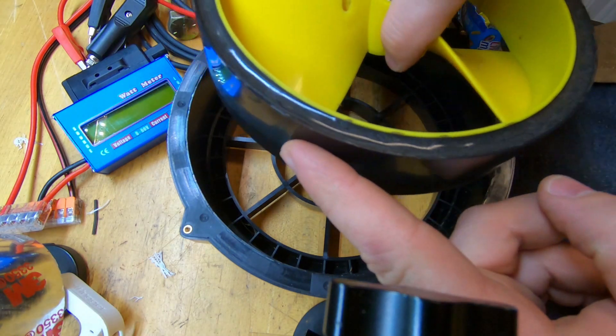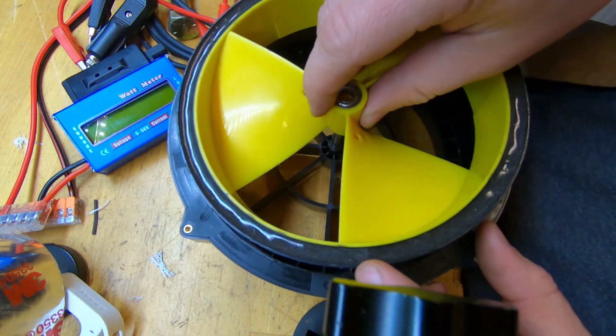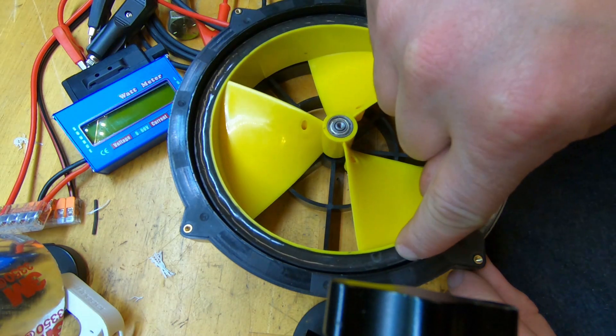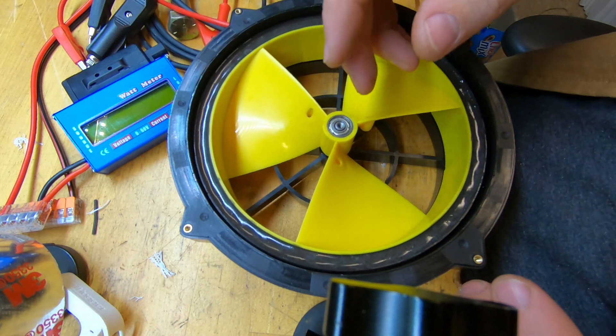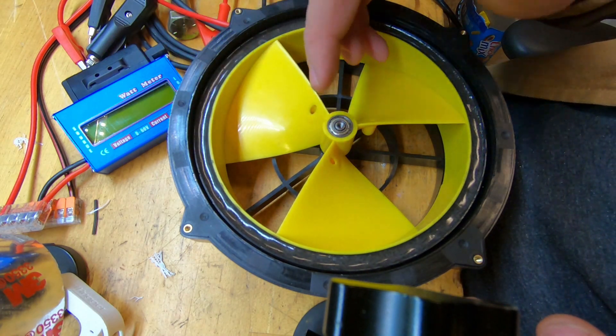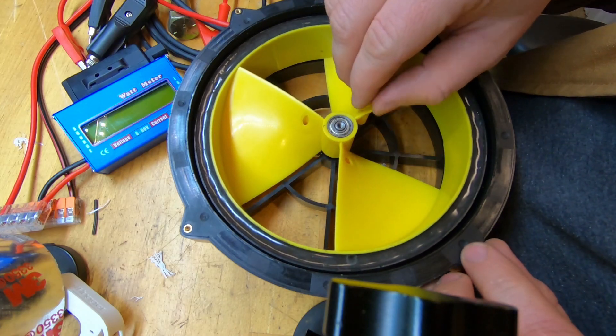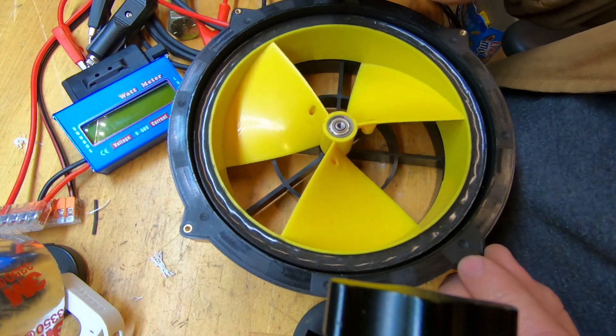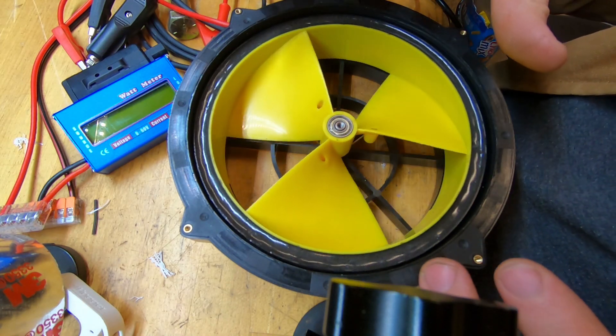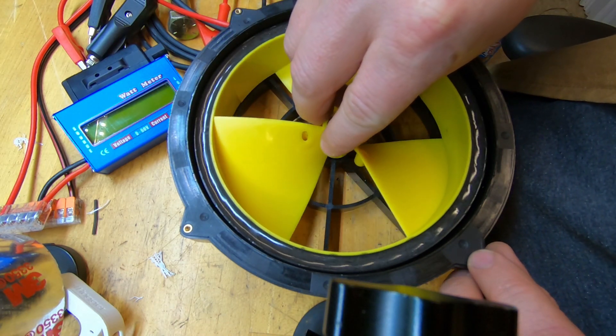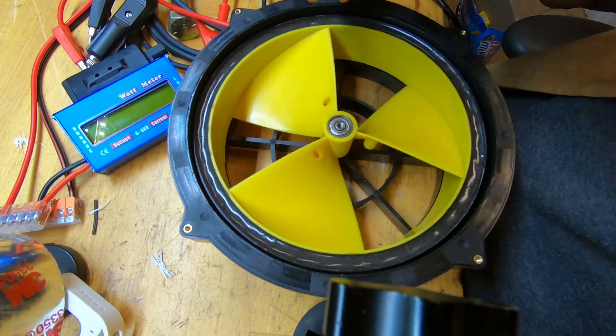And then this has magnets in the perimeter of it. So magnets spinning in front of coils produces flux and therefore voltage and electricity. One thing of note with this is that there is no cogging. Normally, you would expect in a generator that it would want to stick with the magnets in certain locations.